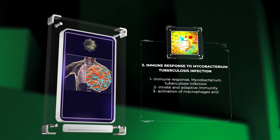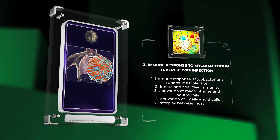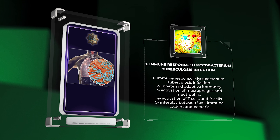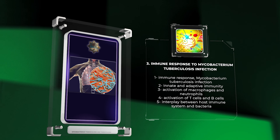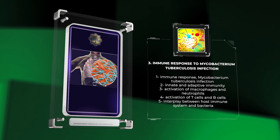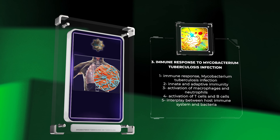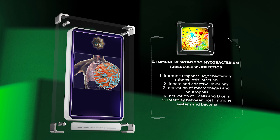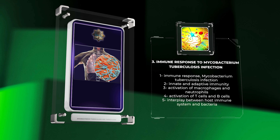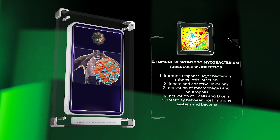The video explores the complex immune response to Mycobacterium tuberculosis infection. It covers innate and adaptive immunity, including the activation of macrophages and neutrophils, and the subsequent activation of T cells and B cells. The outcome of the infection depends on the interplay between the host immune system and the bacteria.